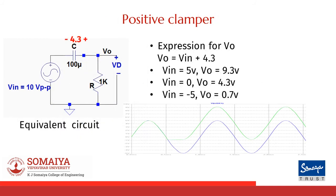The circuit shown here is an equivalent circuit when the diode has become reverse biased. The expression for Vout can be written as VIN plus the capacitor voltage, which is 4.3 volts in this case. When VIN is equal to 5 volts, output would be 9.3 volts. When input is equal to 0 volts, output would be 4.3 volts. And when input is equal to minus 5 volts, output would be 0.7 volts. As you can see, the reference has now shifted from 0 volts to 4.3 volts, and hence we call it a positive clamper.